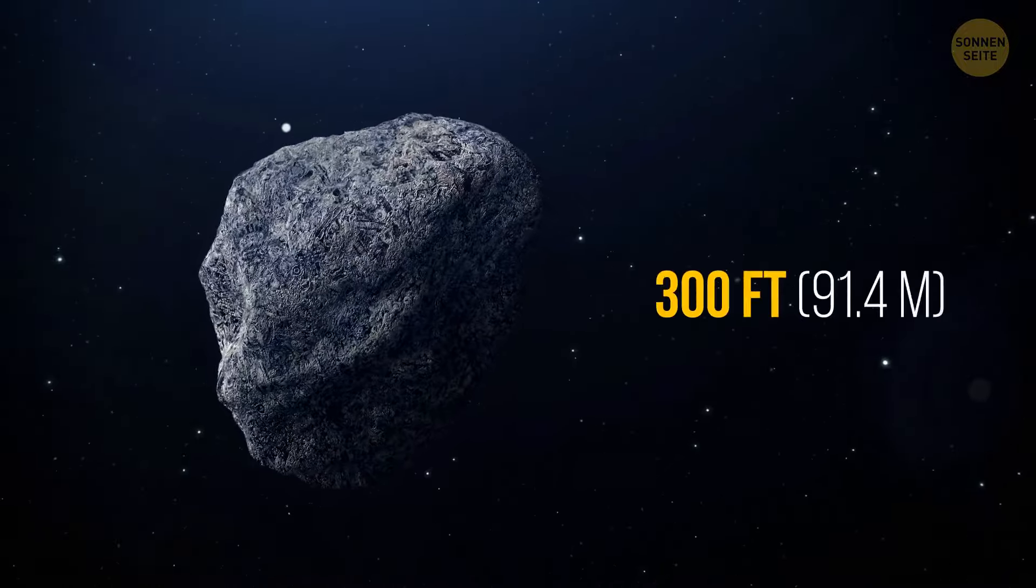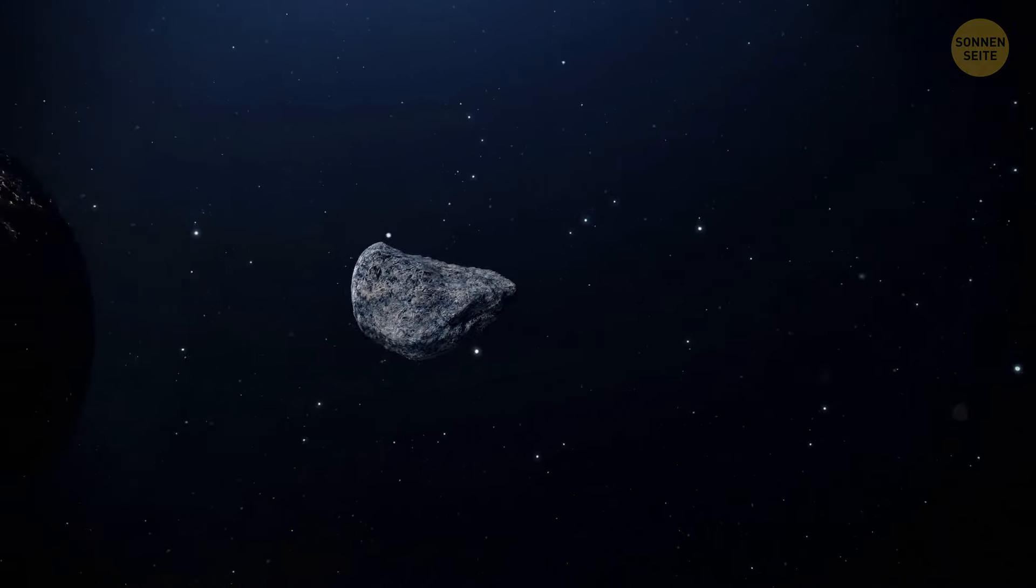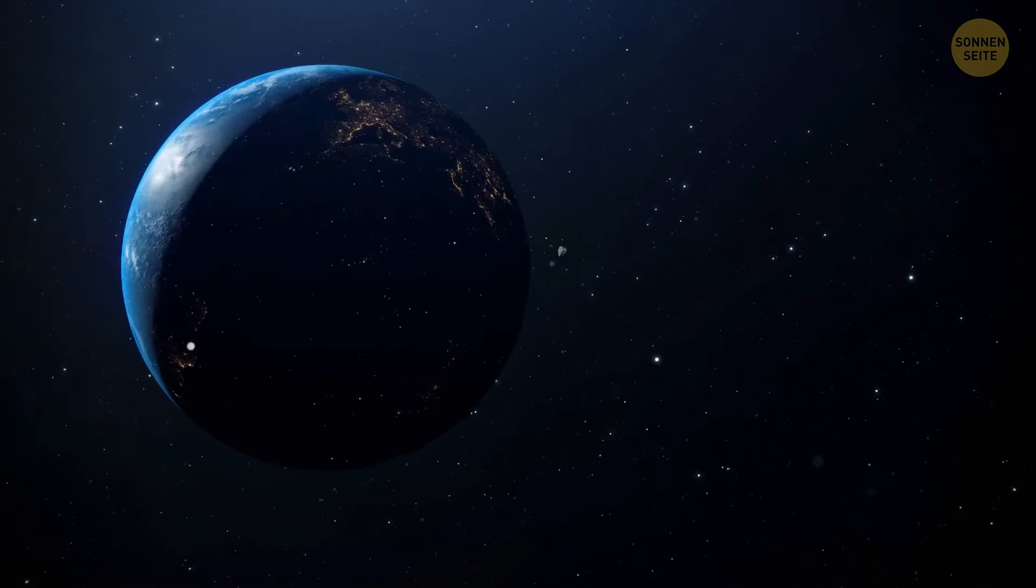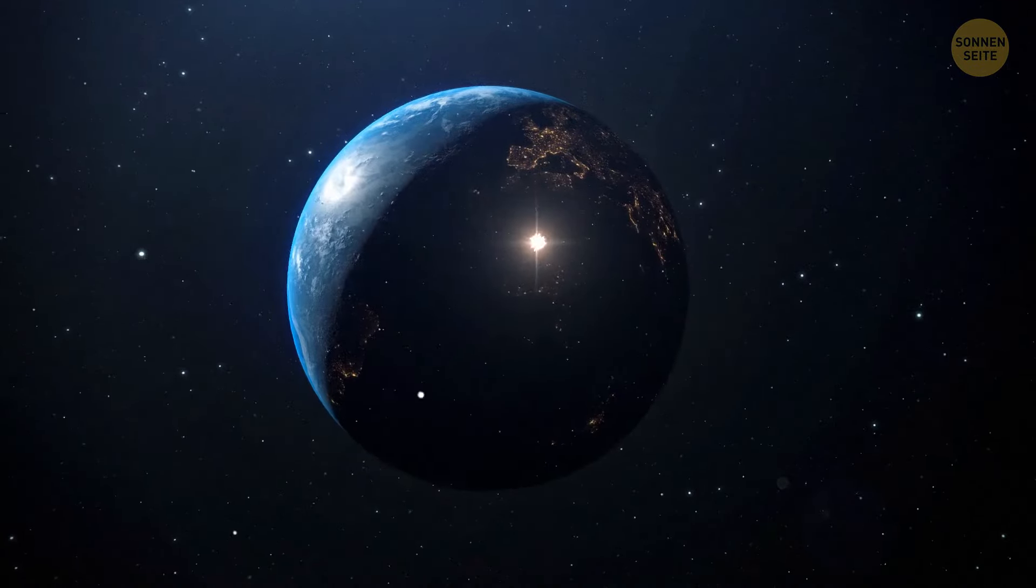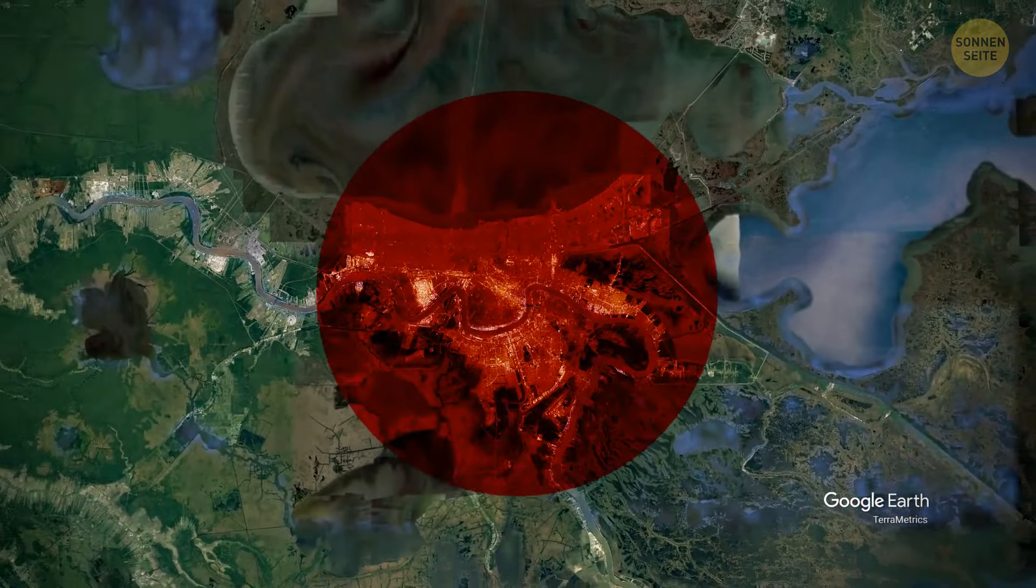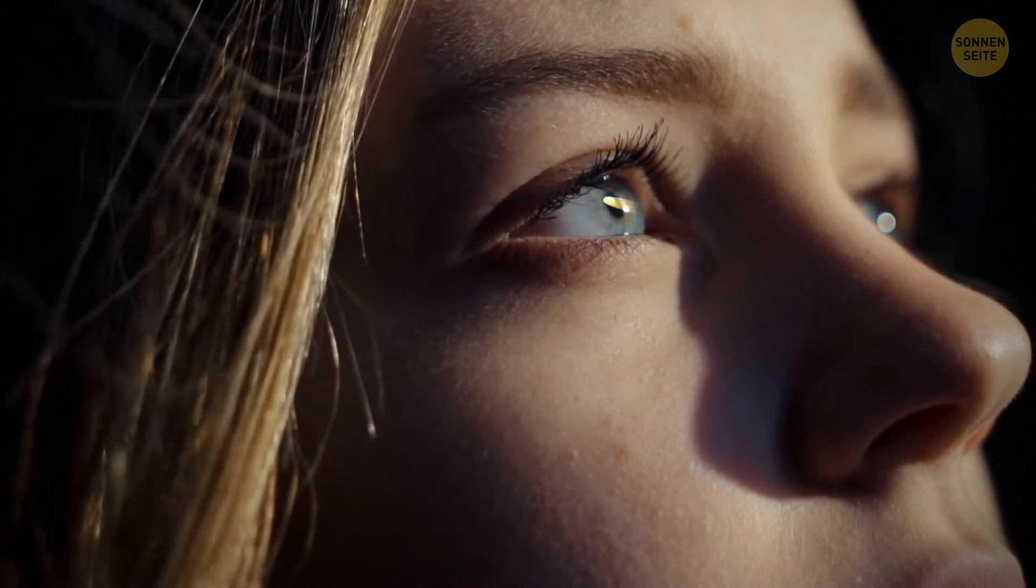Now let's move on. 300 feet, this is the height of the Statue of Liberty together with the pedestal. Such a giant can be seen every 4,500 years. And this is the first asteroid on our list that may literally crash into Earth. The consequences are disastrous. Not only may it demolish an entire city, but it can also set fire to neighboring areas.